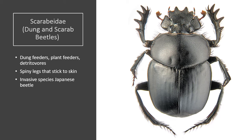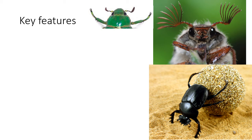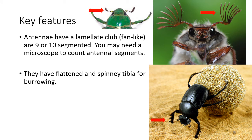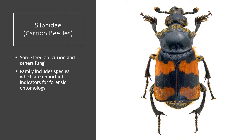Next, we have the scarabs. Scarabs are stout-bodied beetles, many with bright metallic colors. They have distinctive clubbed antennae composed of plates called lamellate, that can be compressed into a ball or fanned out like leaves to sense odors. The front legs of many species are broad and adapted for digging. In some groups, males, and sometimes females, have prominent horns on the head to fight over mates or resources. Some key features of scarabs include the fan-like club on the antennae, which are 9 or 10 segmented — you may need a microscope to count all the antennae segments. They often have flattened and spiny tibia for burrowing, and are generally very heavily built and stockier than other beetle families.